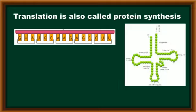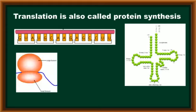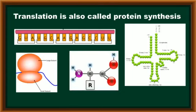Along with that, the tRNA molecule has a function to transport the amino acids from cytoplasm to the protein synthesis complex. The ribosome is one of the cell organelles. It participates in protein synthesis, so that it is also referred as protein factory.